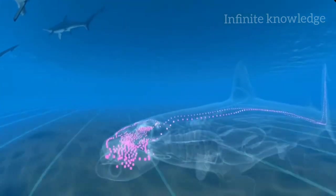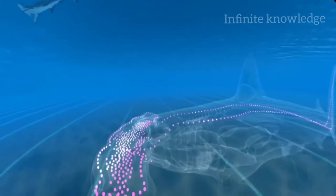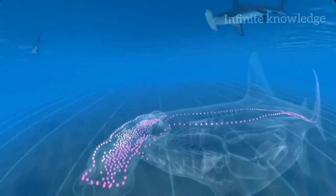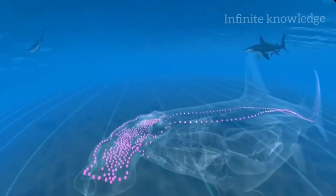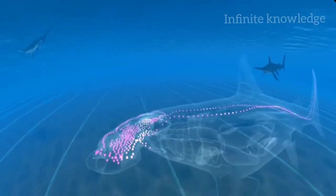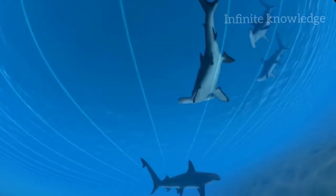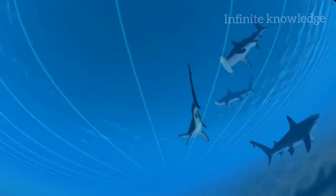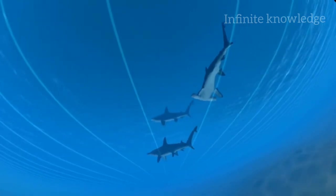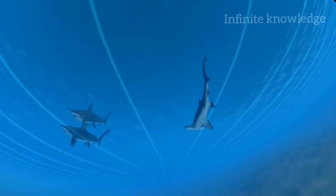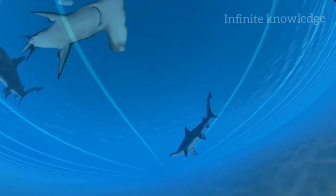Hammerhead sharks have special gel-filled organs called the ampullae of Lorenzini, which detect electric fields, both natural fields and those created from swimming across magnetic fields. Sensitivity to magnetic fields helps sharks and other fish swim in straight lines across the open ocean.